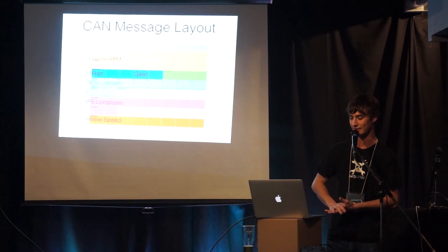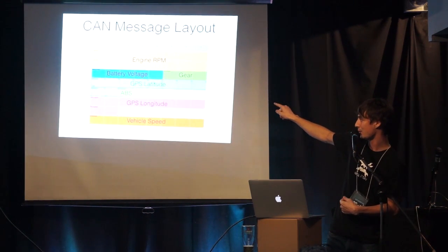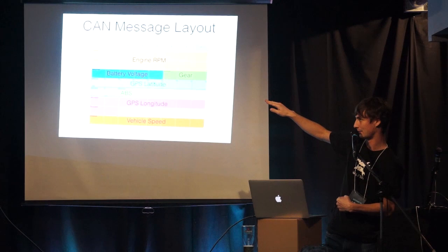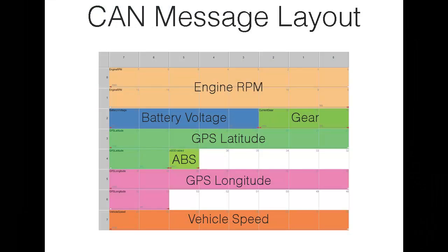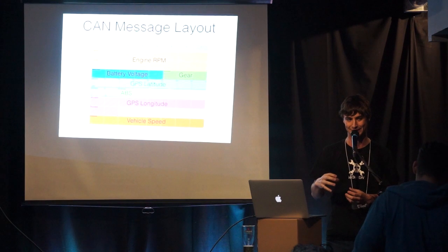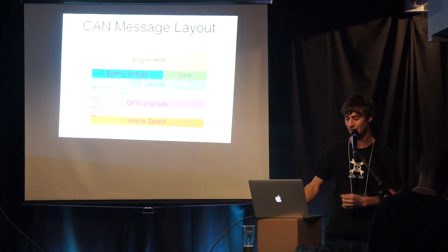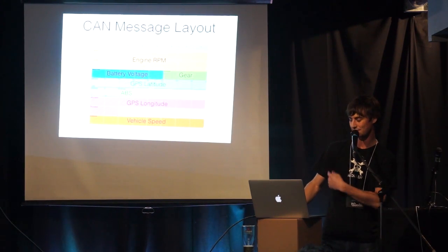You end up with messages laid out in a map — going down the rows you have bytes. So two bytes for engine RPM, another byte containing both battery voltage and gear, more bytes for GPS latitude, ABS, and longitude. Going across in columns you have the bits. This is how you get from bits and bytes to real-world values. They try to pack things tightly to make maximum usage of these messages.